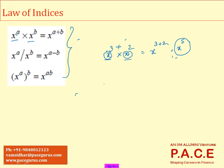Even if someone says x to the power of 2a multiplied by x to the power of 4b, it's nothing but x to the power of 2a plus 4b. This can be used even for solving unknowns — it has a lot of purposes. Simply add the exponents when the bases are the same and the terms are multiplied.